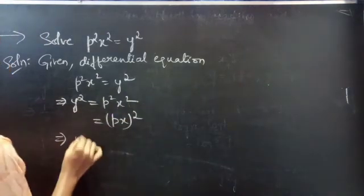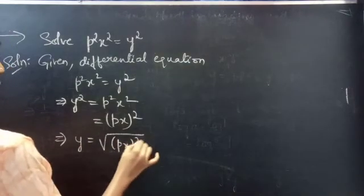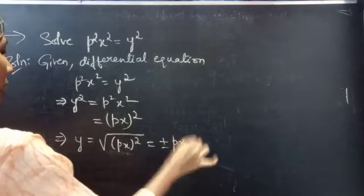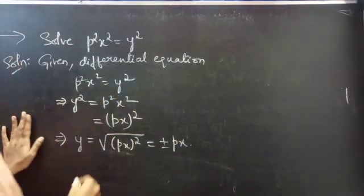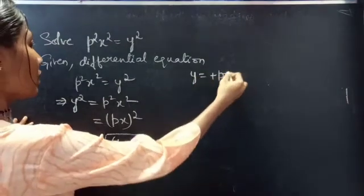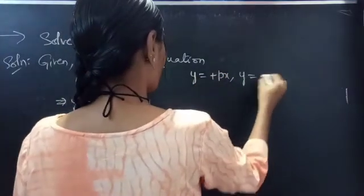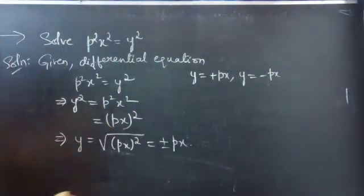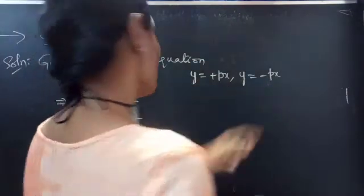Then, y equals to the square root of (px) whole squared, which equals plus or minus px. So we have y equals to plus px and y equals to minus px, and we will find the solution for each of these.